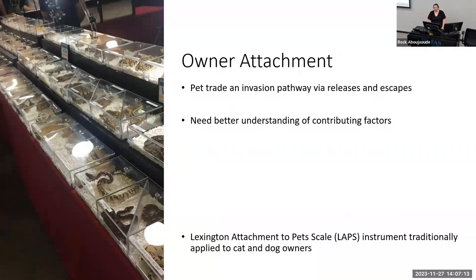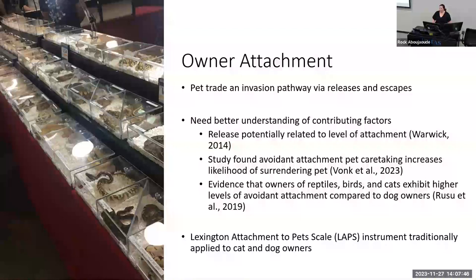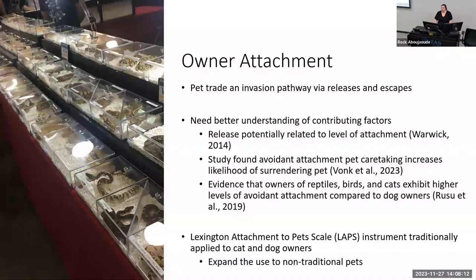We know the pet trade is an invasion pathway via releases and escapes, and there's a need to understand the contributing factors to those releases. One concept explored is whether releases are related to level of attachment to these non-traditional pets. A recent study found that avoidant attachment in pet caretaking increases the likelihood of surrendering a pet, and evidence shows owners of reptiles, birds, and cats exhibit higher levels of avoidant attachment compared to dog owners. I was interested in taking the known Lexington Attachment to Pet Scale, which has been used on cat and dog owners, and applying it to non-traditional pets.